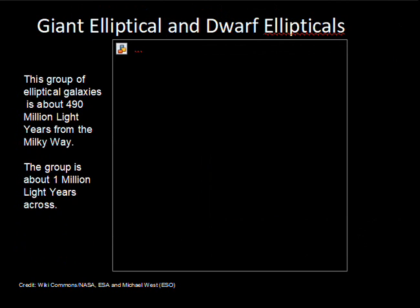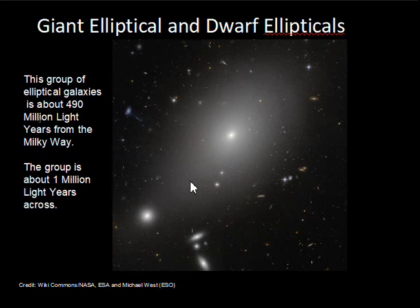There are also giant elliptical galaxies to consider. I'm not saying much about the dwarf elliptical galaxies — those about 10 times smaller than the Milky Way — but the giant ellipticals are easier to see. We're certain we do not detect all the dwarf elliptical galaxies in clusters, even though we can see the giant elliptical galaxies in those clusters.